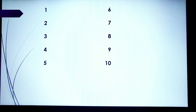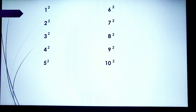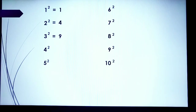I have here numbers 1 to 10. Let's take the squares of each number by multiplying the number by itself. 1 squared is 1 times 1, which is equal to 1. 2 squared is 2 times 2, which is equal to 4. 3 squared is 3 times 3, which is equal to 9. 4 squared is 4 times 4, which is equal to 16. 5 squared is 5 times 5, which is equal to 25.